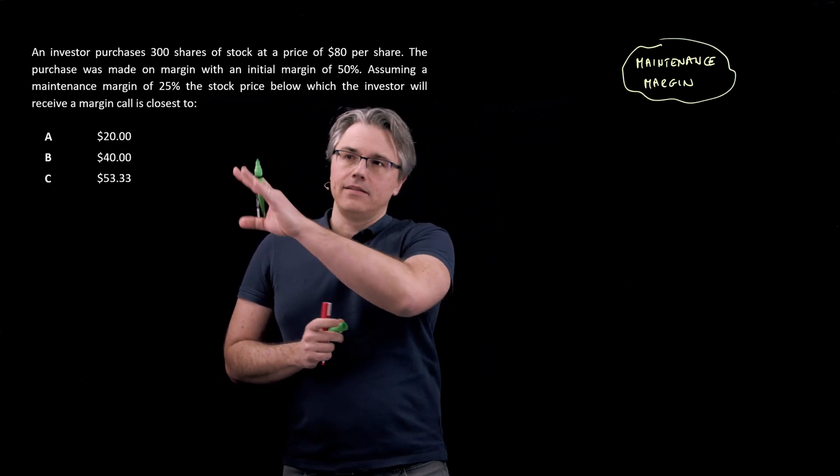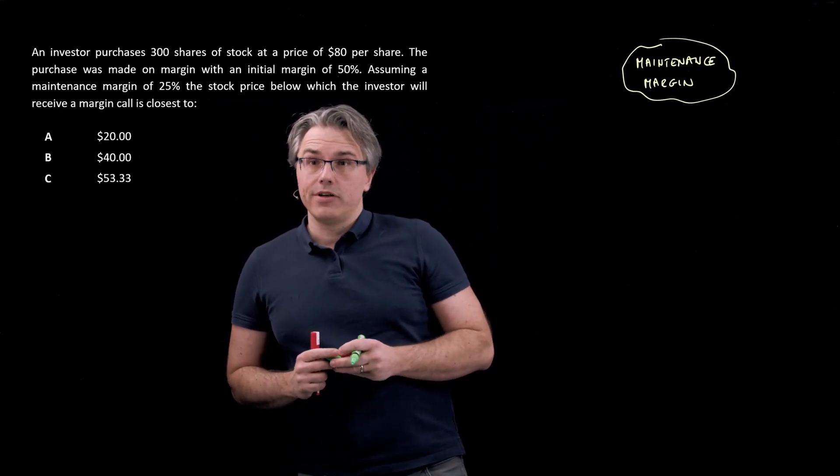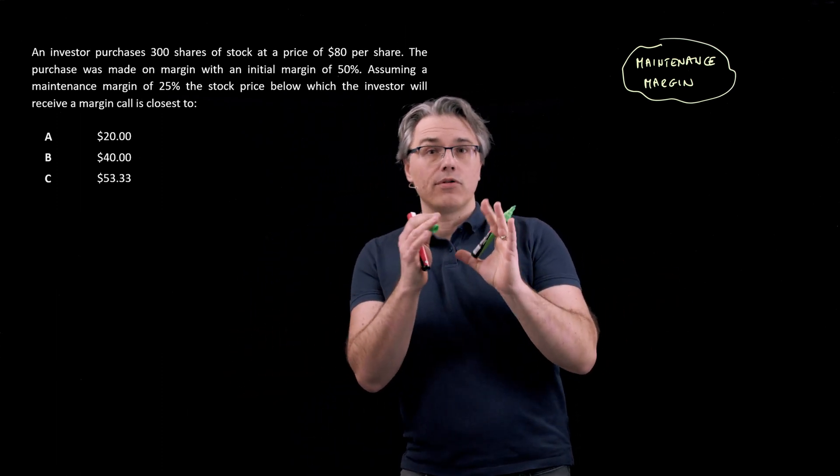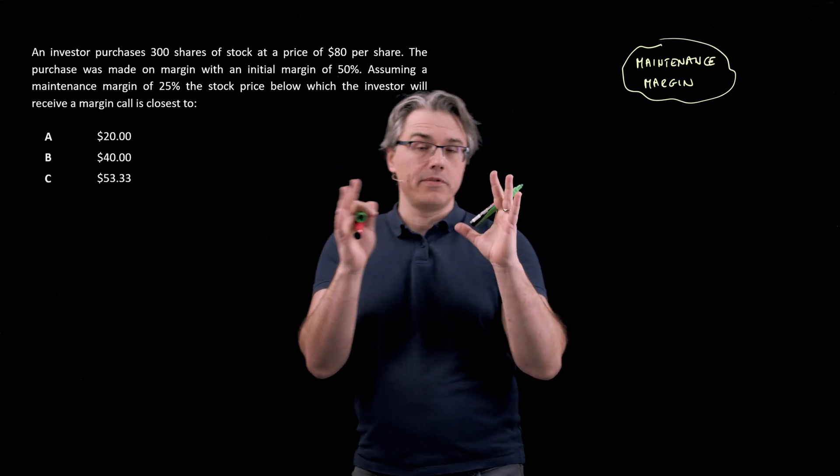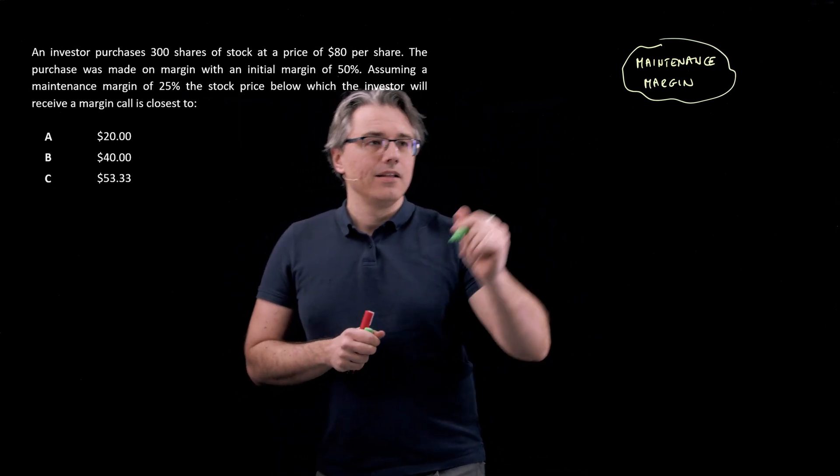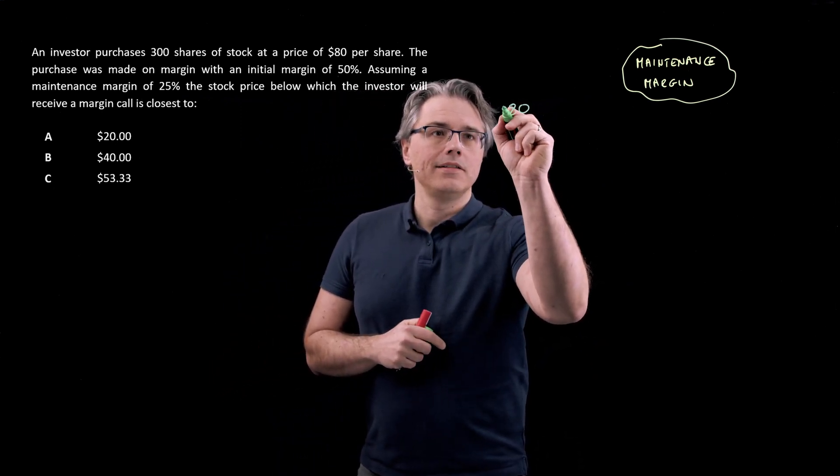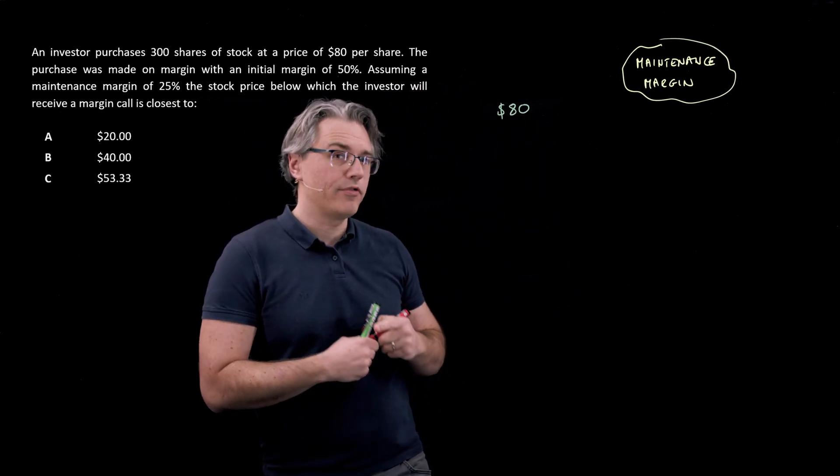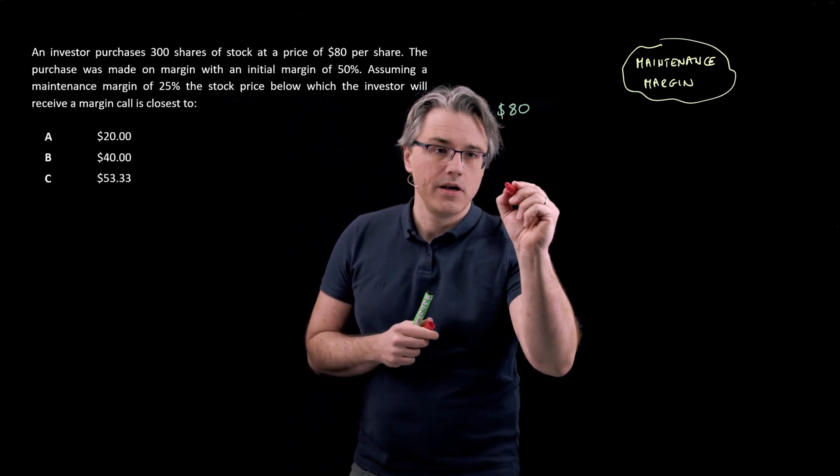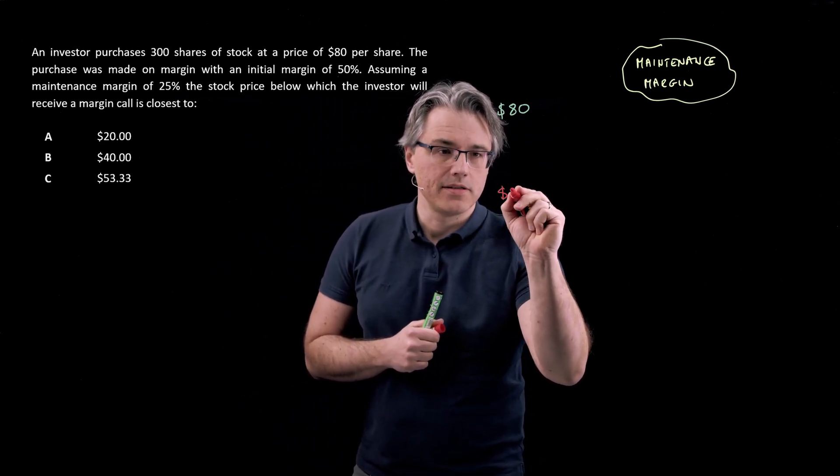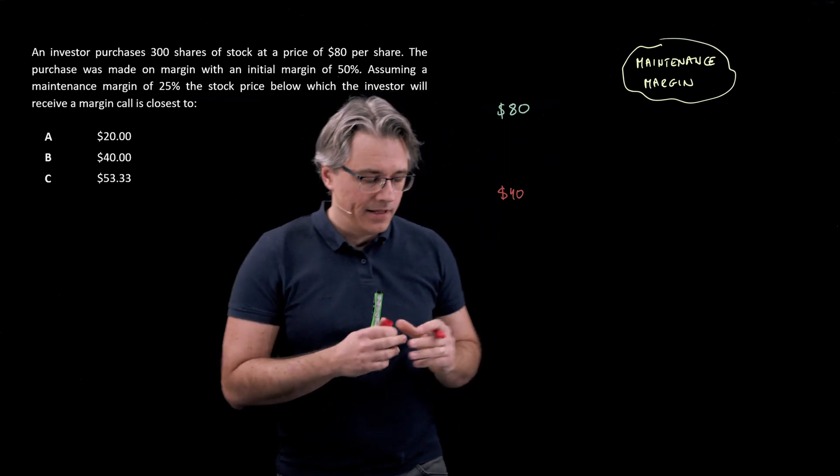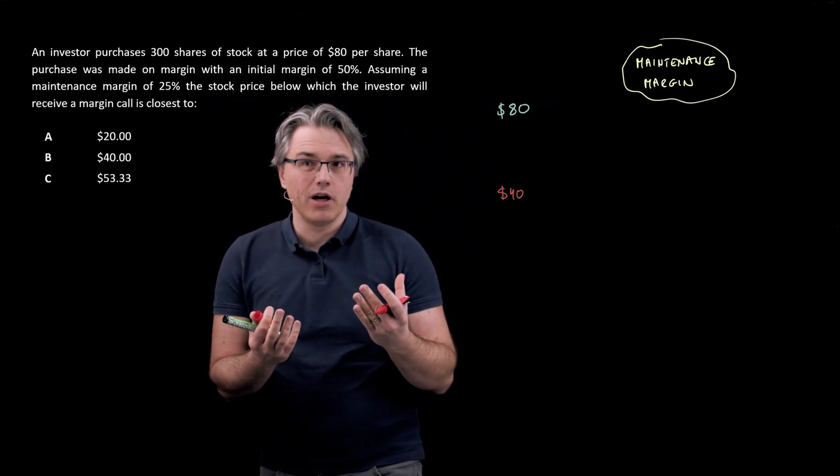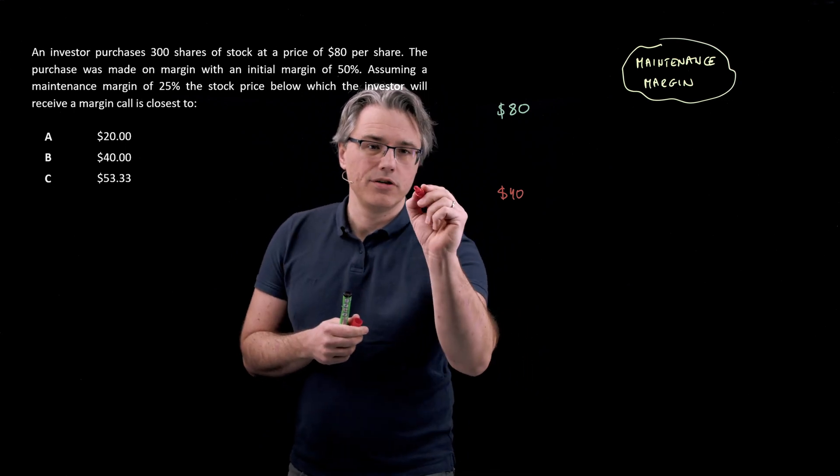It doesn't matter that we bought 300 shares. It doesn't matter whether it was 30, 300 or 3,000. So let's focus on the problem on a sort of per share, per single share level. The purchase price was 80. However, we as investors only contributed half of that price towards the purchase. So on a single share basis, that would have been 40. And this would be described as your initial margin.